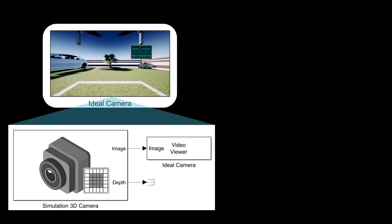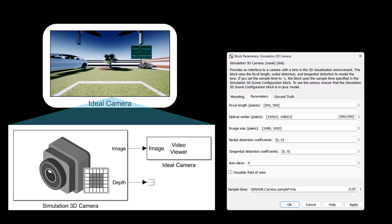Similarly, Simulink also offers the ideal camera model, which simulates key parameters such as focal length, optical center, resolution, and lens distortions.